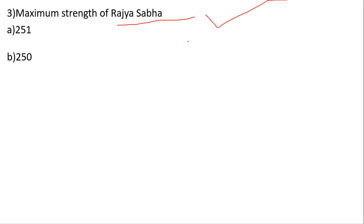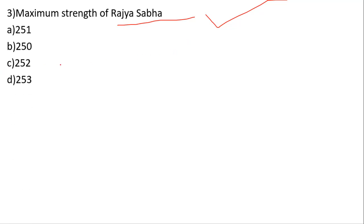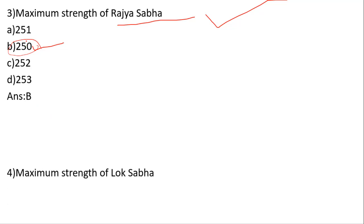Who elects the Speaker of the Lok Sabha? The options are 251, 250, 252, 253. The correct answer is B — 250. And 250 is also the maximum strength of Rajya Sabha.